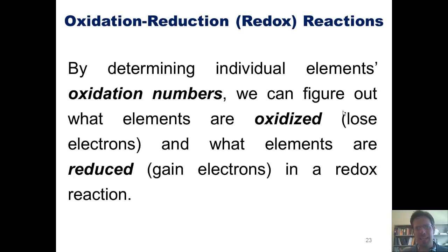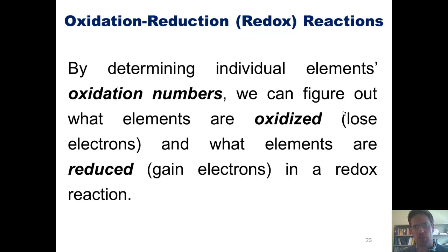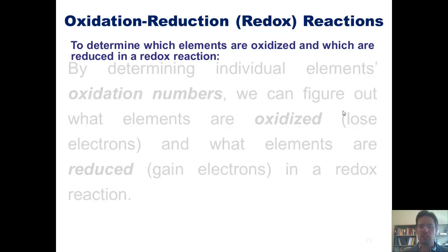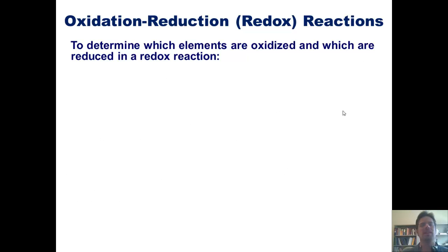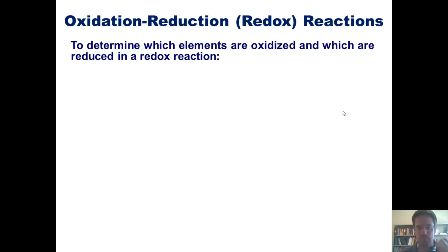By determining individual elements' oxidation numbers, we can figure out what elements get oxidized — that is, lose electrons — and what elements get reduced — that is, gain electrons — in a redox reaction. I'll show you how. To determine which elements are oxidized and which ones are reduced in a redox reaction, we have to go through the following steps.